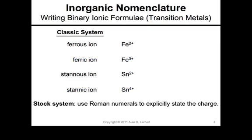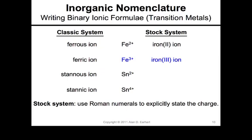So we're going to use the Stock system, introduced a few decades ago. What it does is use Roman numerals to explicitly state the charge on the ion. So ferrous becomes iron(II) — the 2 is the charge, 2+. Ferric becomes iron(III). Stannis becomes tin(II) and stannic becomes tin(IV).